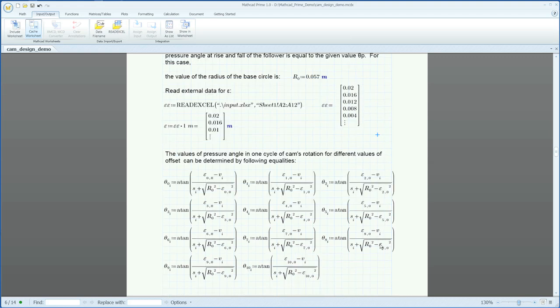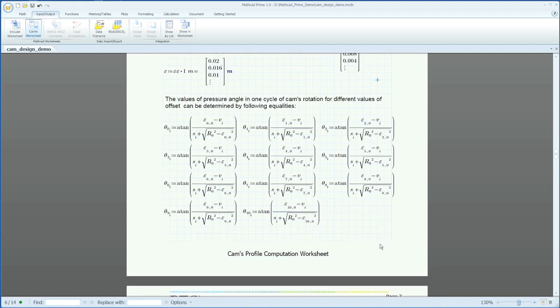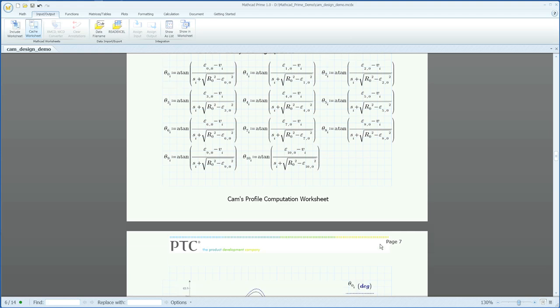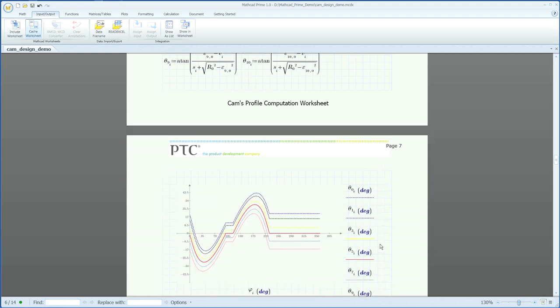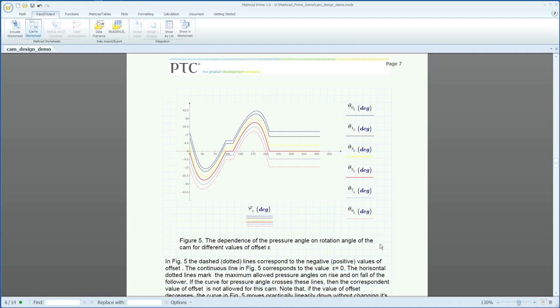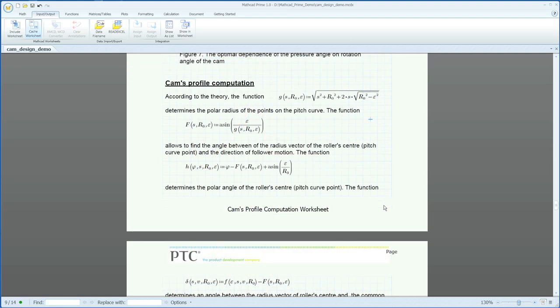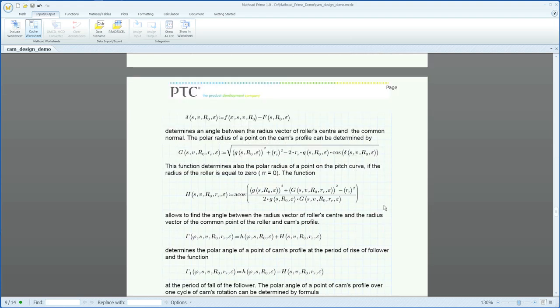Calculated results from the data file are used to generate pressure angle curves for the entire revolution of the cam. Engineers can then easily compare this to documented empirical best practices to establish the optimal design parameters for the operating rotational speed of the cam.